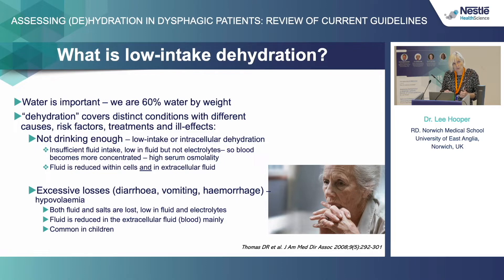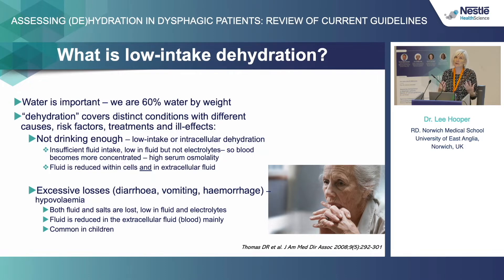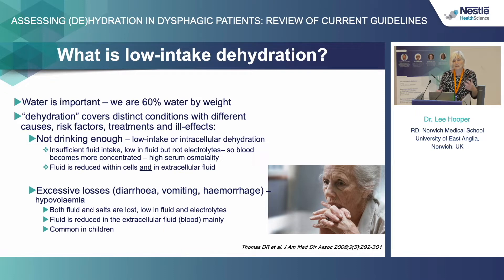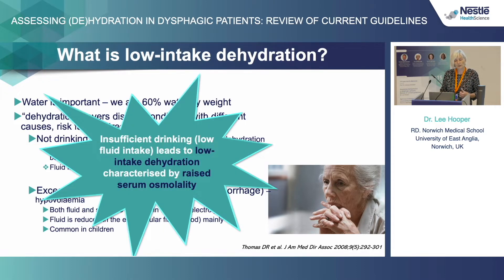That concentration means fluid moves out of our cells into our extracellular circulation, so our cells shrink and function a little bit less well. The other sort of dehydration is when you have diarrhea, vomiting, or hemorrhage and you lose both fluid and electrolytes — you lose fluid mostly from your extracircular circulation. That has very different effects on health. So they're very different conditions. Insufficient drinking leads to low intake dehydration characterized by raised serum osmolality, and that's what I'm going to be talking about today.